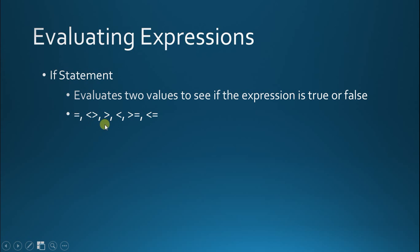Then of course we have the greater than sign — value one is greater than value two. Then we have the less than sign — value one is less than value two. Then we have greater than or equal to, so value one can be greater than or equal to value two and that still results in a true statement. Then we have less than or equal to, meaning value one is less than all the way up to equal to value two, and that would also return a true result.